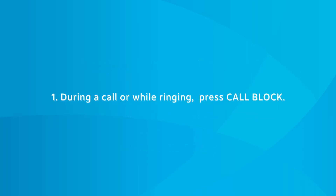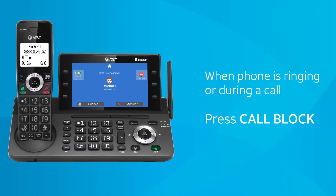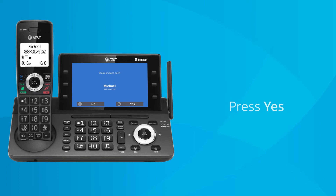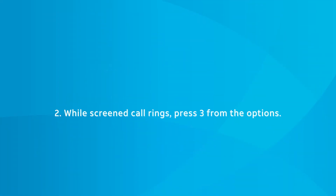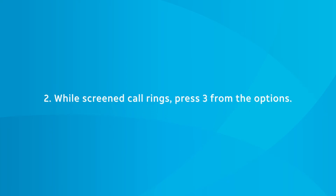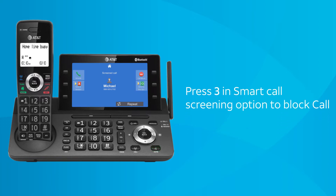You can add it during a call or while ringing. Receive an incoming call under Smart Call Blocker Screening and press 3 in the Smart Call Screening option. To block this number, press 3.